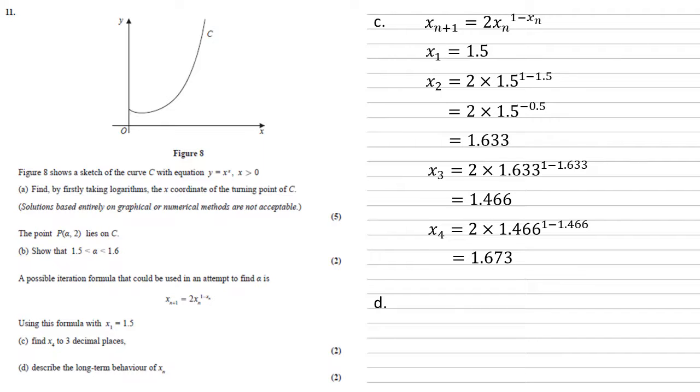Now for part d, we need to describe the long-term behaviour of x n. Using the answer button on the calculator, we can keep pressing equals over and over again until we see a pattern. Eventually, we'll see that our answers keep flipping between 1 and 2. So the long-term behaviour is it alternates between 1 and 2.